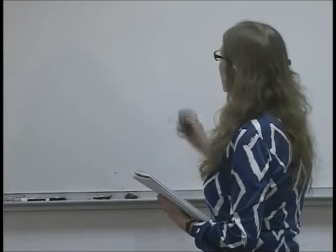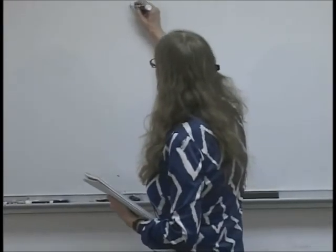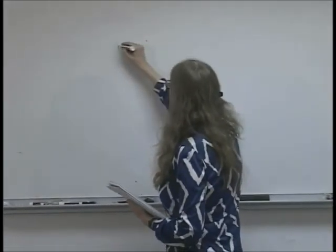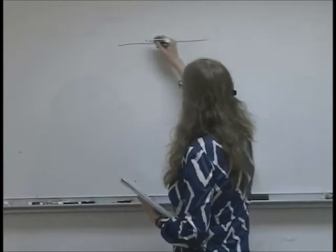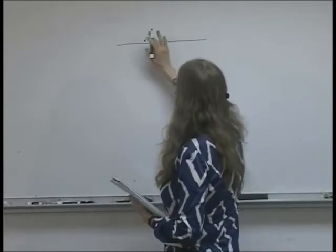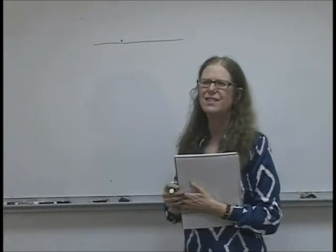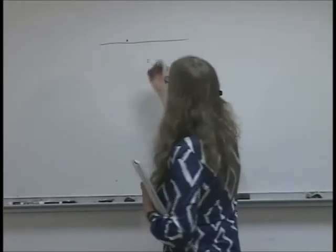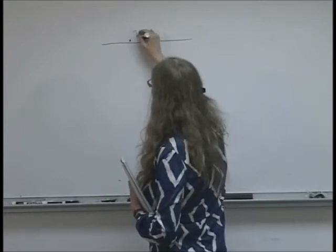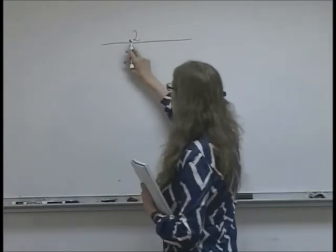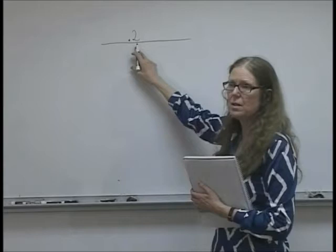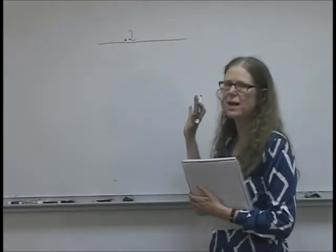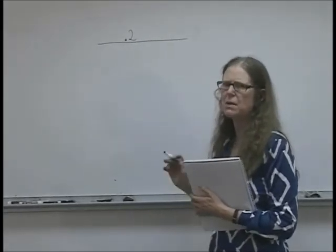So a decimal is a little dot on a line, kind of toward the bottom of the line, and anything to the right of it is like a fraction. It's less than 1. So if I have 0.2 with a 2 after the decimal on the right side, I'm going to explain what that means in a minute.